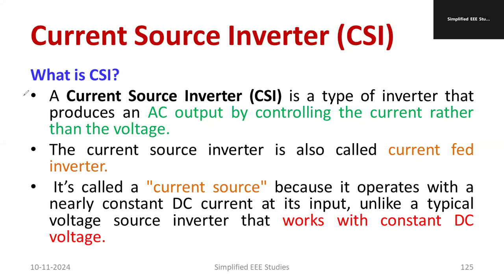First of all, we will understand the basics. The current source inverter is a type of inverter that produces AC output by controlling the current rather than voltage. The main strategy here is that your output is controlled by current in spite of the voltage. You can call current source inverter as current fed inverter.